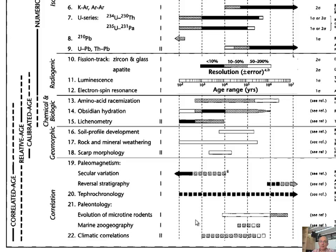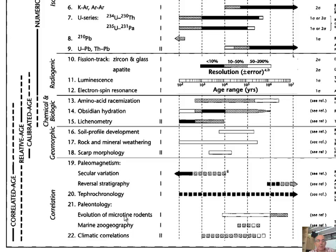Other methods I'll mention briefly include lichenometry and other relative methods. Soil profile development — the longer a surface has been there, the more developed the soil weathering. Scarp morphology — a young scarp is steeper than an old one. Paleomagnetism is also quite powerful. Tephra dating can work well in volcanic settings, done extensively in Japan. Paleontology rounds out this overview of many dating methods.